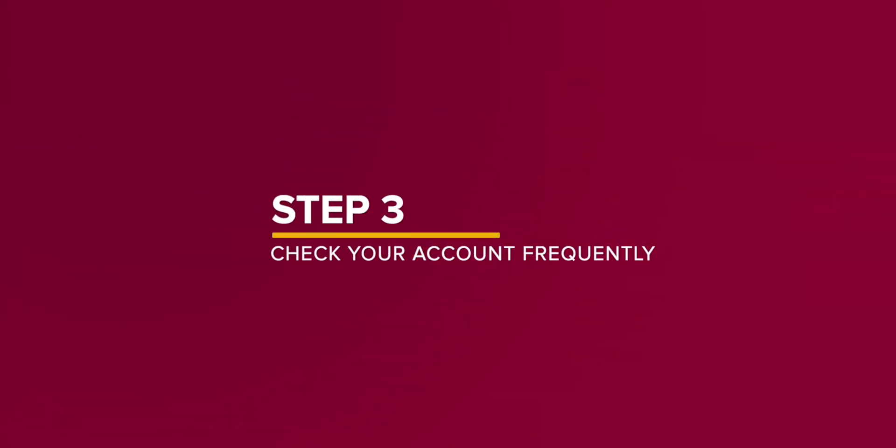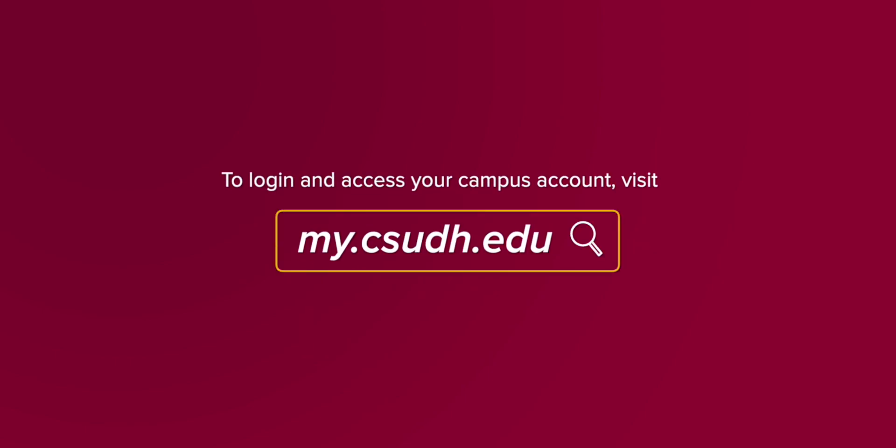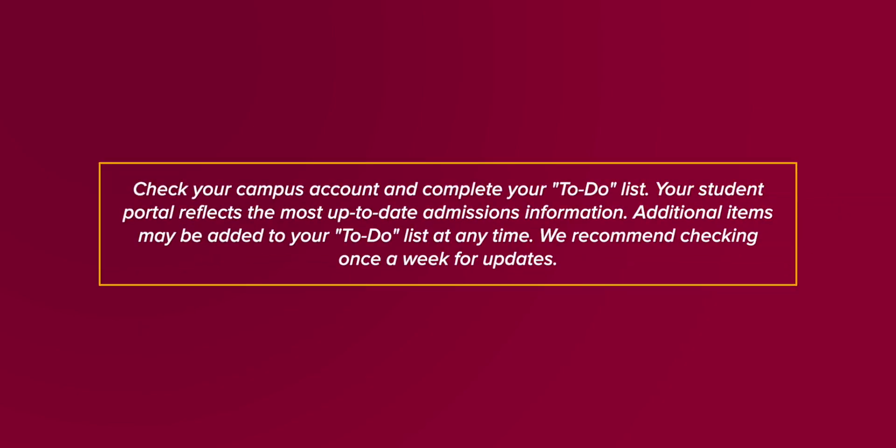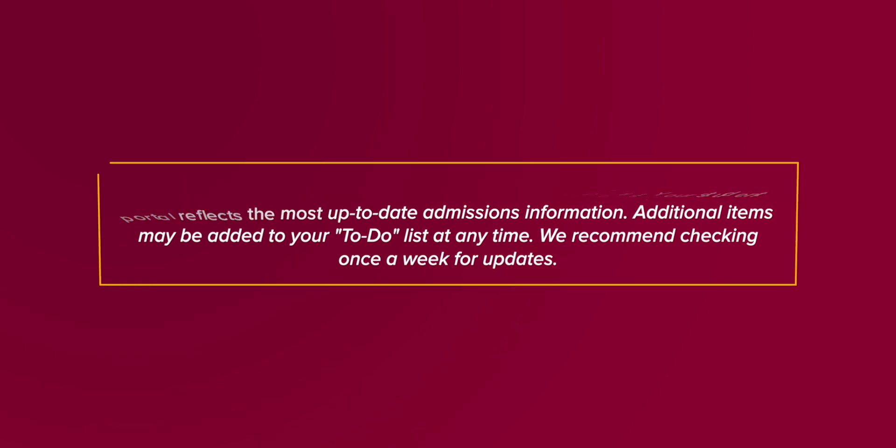Step 3: Check your account frequently. To log in and access your campus account, visit my.csudh.edu. Check your campus account and complete your to-do list. Your student portal reflects the most up-to-date admissions information. Additional items may be added to your to-do list at any time. We recommend checking once a week for updates.